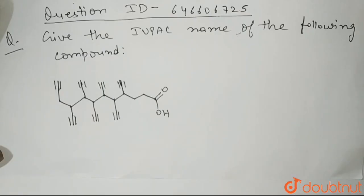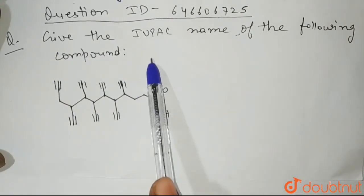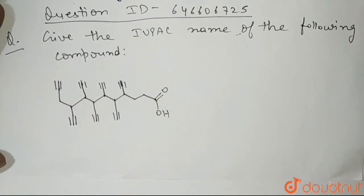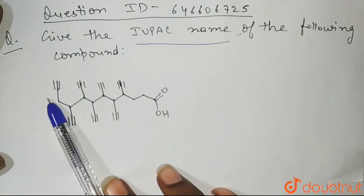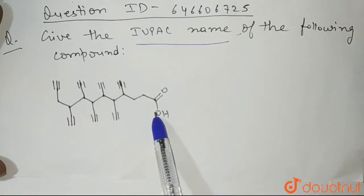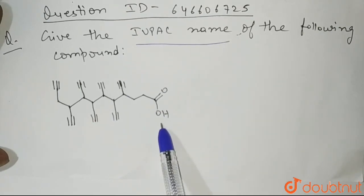Hello students, the question is: give the IUPAC name of the following compound. So here, this is the compound given to us, and we need to write the IUPAC name of this compound. As you can see, here we have many triple bonds, and we also have the main functional group, that is our carboxylic acid, C double bond O, OH.